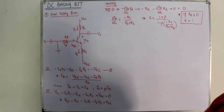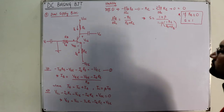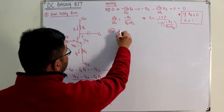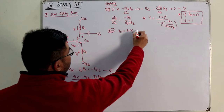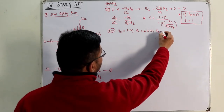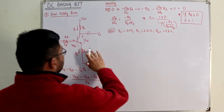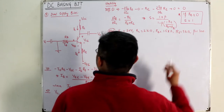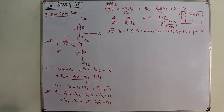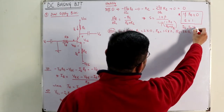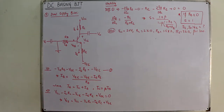For an example you can work on your own. Here is a homework problem: VCC is given as 20 volts, RC is 2 kilo ohms, RB is 1.5 kilo ohms, RE is 3 kilo ohms, beta is given as 100. Find out IB, IE, and VCE. This is your homework.